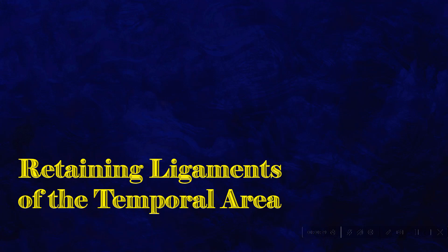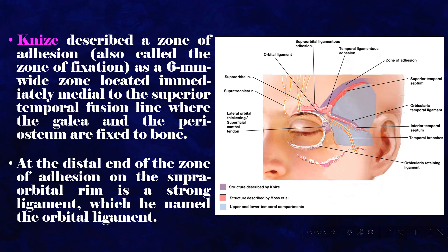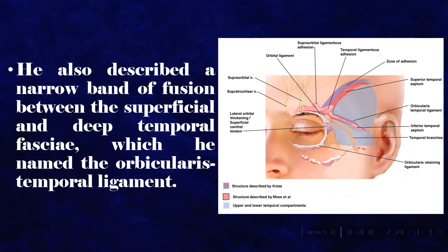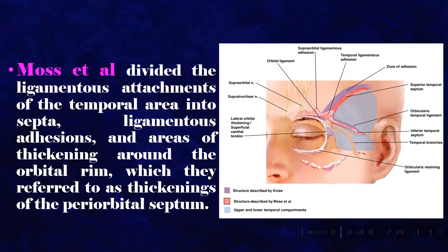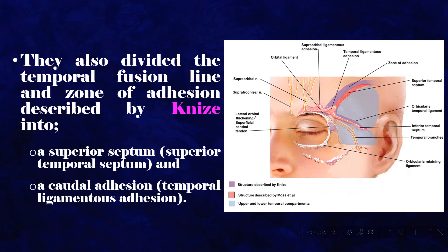Regarding the retaining ligaments of the temporal area, Knies described a zone of adhesion — also called the zone of fixation — as a 6 mm wide zone located immediately medial to the superior temporal fusion line where the galea and the periosteum are fixed to bone. At the distal end of the zone of adhesion on the supraorbital rim is a strong ligament he named the orbital ligament. He also described a narrow band of fusion between the superficial and deep temporal fasciae, which he named the orbicularis temporal ligament. Moss et al. divided the ligamentous attachments of the temporal area into septa, ligamentous adhesions, and areas of thickening around the orbital rim, referred to as thickenings of the periorbital septum, and further divided the temporal fusion line and zone of adhesion into a superior temporal septum and a temporal ligamentous adhesion.